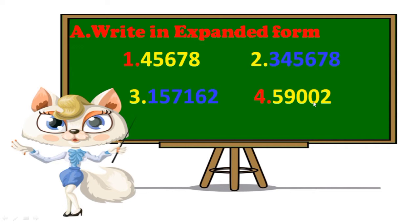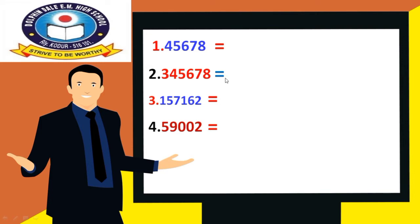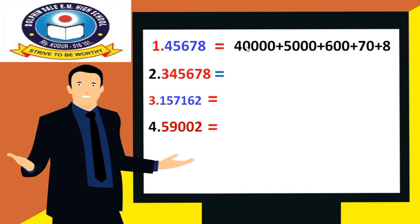We have to write the expanded form. How we can write expanded form? See here. The first one has place values: ones, tens, hundreds, thousands, ten thousands. The bigger place value is here. Four is in ten thousands place. After four, at the right side, there are four numbers, so we write four after four zeros — forty thousand.